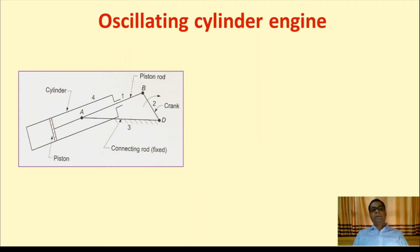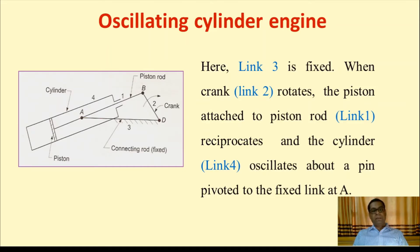The link 3, the connecting rod, has a loop and is fixed. When crank, link 2 or BD, rotates, the piston attached to the piston rod, which is link 1, reciprocates.